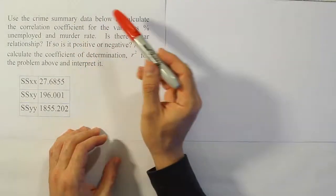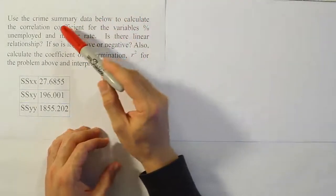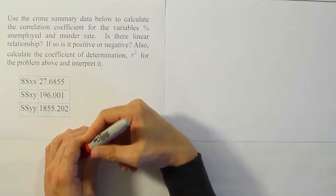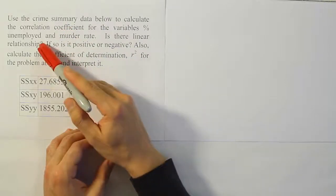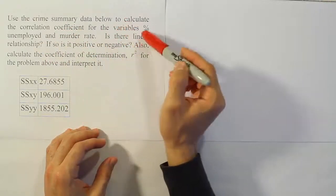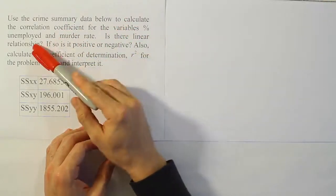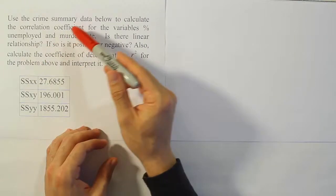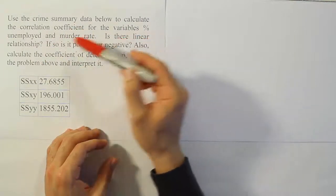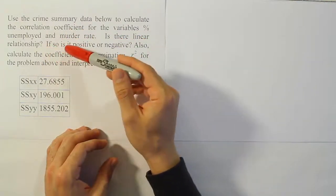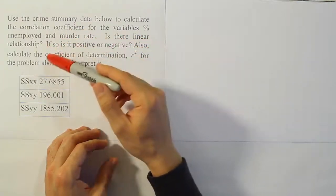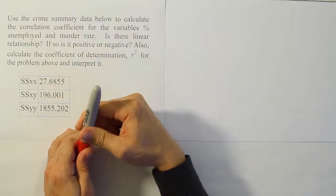Use the crime summary data below to calculate the correlation coefficient for the variables percent unemployed and murder rate. Is there a linear relationship? If so, is it positive or negative? Also, calculate the coefficient of determination r squared for the problem above and interpret it.